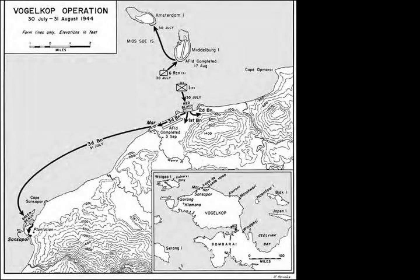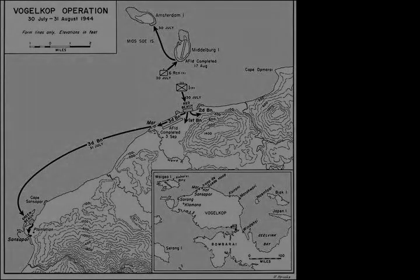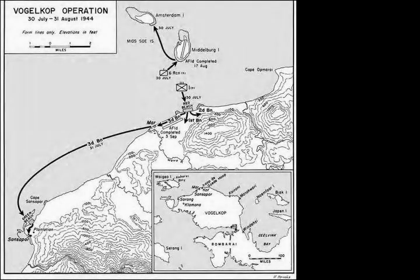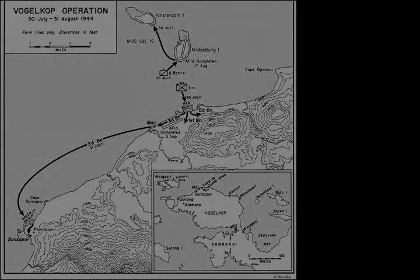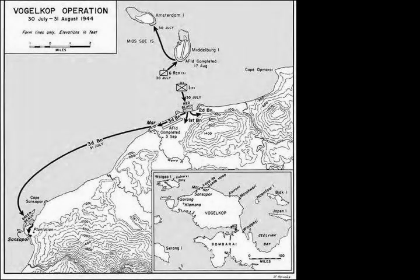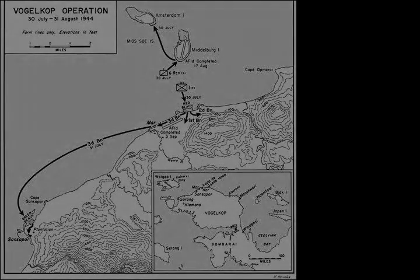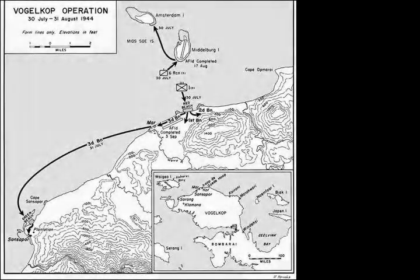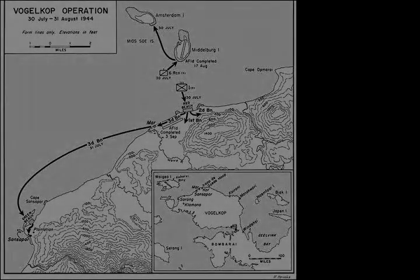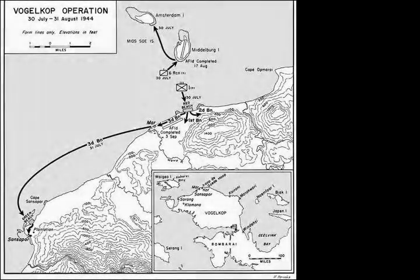All of the landings ultimately proved to be unopposed, and it was not until 16 August that elements of the Japanese 35th Division were able to reach the area. By 31 August, the 1st 63rd Infantry had killed 155 Japanese and taken 42 prisoners, while the American regiment lost only three men killed and four wounded. The 1st Infantry, on the west flank, killed 197 Japanese and captured 154, while losing only four men wounded. The 6th Cavalry Reconnaissance Troop, during its far-flung patrols, killed 42 Japanese and captured five others.